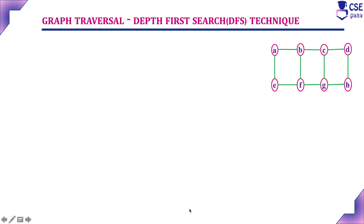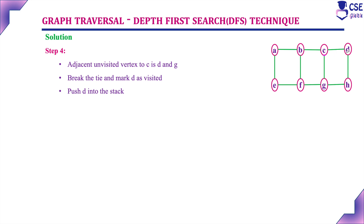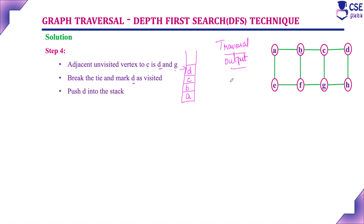Next step: currently visited vertex is C. Adjacent unvisited vertices to C are D and G, because B is already visited. Both D and G are unvisited and adjacent to C. We break the tie and mark D as visited. The stack already contains A, B, C — now we push D into the stack, so the top of the stack element is D. The traversal output is A, B, C, D.